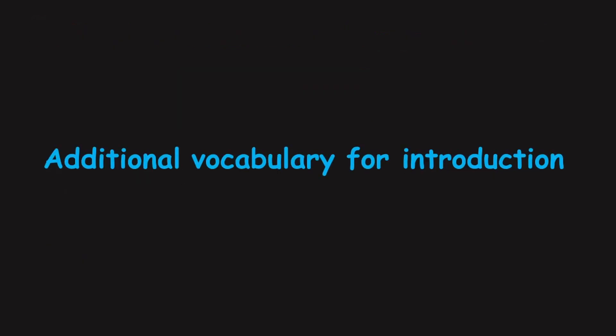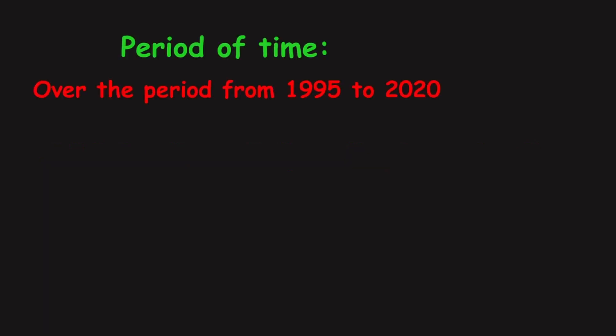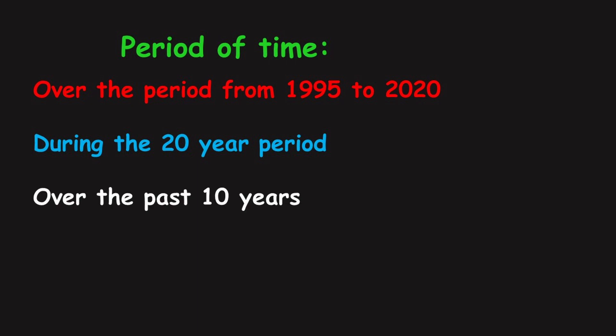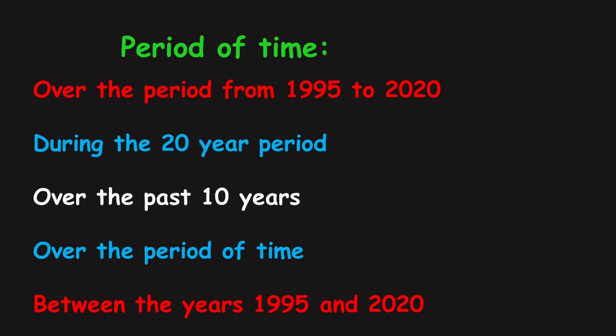Before we start analyzing the example, let us consider some additional vocabulary for introduction writing. Ways to paraphrase the period of time: over the period from 1995 to 2020; during the 20-year period; over the past 10 years; over the period of time; between the years 1995 and 2020.